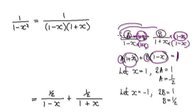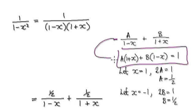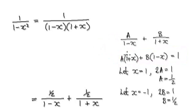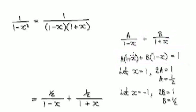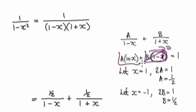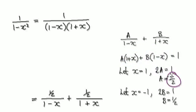This whole thing here must equal one, and this should work for all values of x. Let's select x to be one. When x is one, this thing here will be zero — zero times B — so this whole thing here will be zero. This will then give you 2A, which must equal one. So A must be a half.